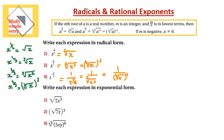Now, write each expression in exponential form — changing from radical to exponential. I have the square root of 7x cubed: note that only x is cubed, not 7. So this is 7 to the power of half (only 7 is under the radical), and x to the power of 3 over 2 (under the radical and also cubed). In the next case, the square root of 7x all cubed means both 7 and x are cubed, giving 7 to the power of 3 over 2, and x to the power of 3 over 2.